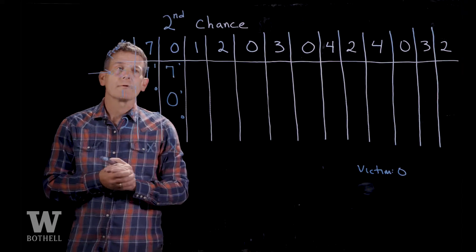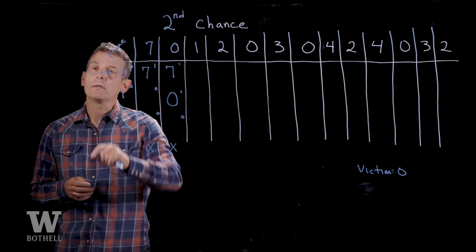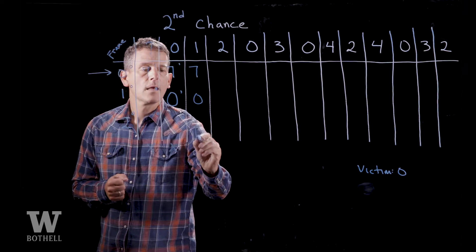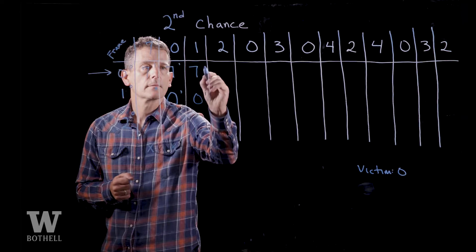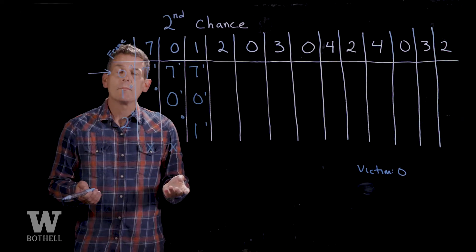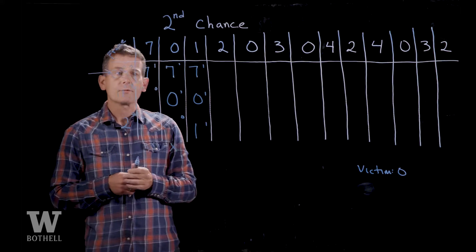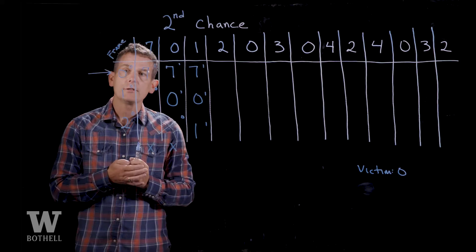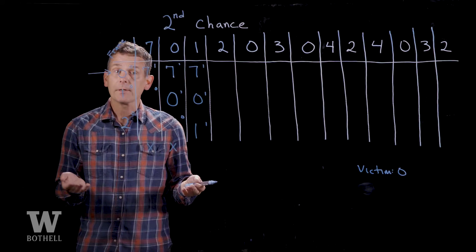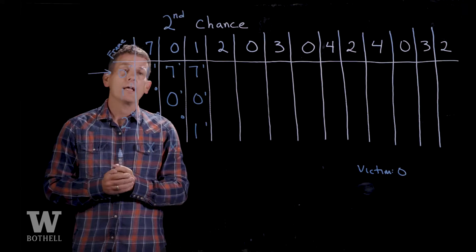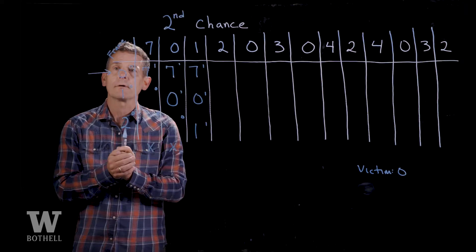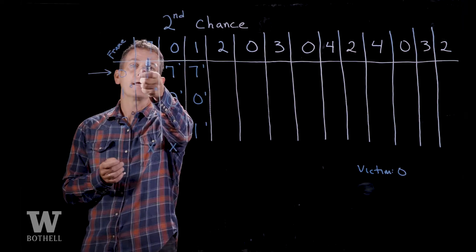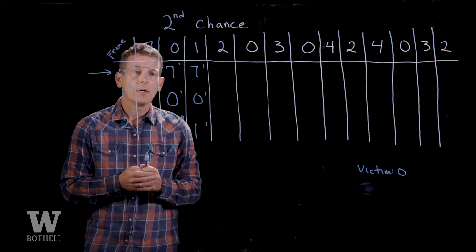Virtual page number one gets referenced next. We have room in page frame two, so let's put that there. Each of the reference bits are now set. Our physical memory is now full. If the next reference was to seven, zero, or one, we'd be fine. Unfortunately, we're now referencing virtual page two. It's not in physical memory and there is no room, so we have to kick out one of pages seven, zero, or one. Least recently used would say go ahead and kick out seven, but that's hard to implement.